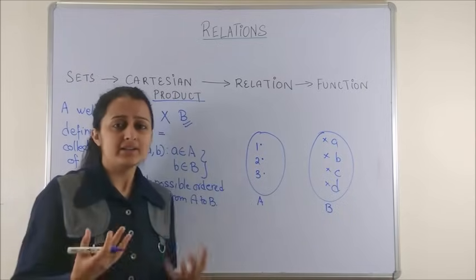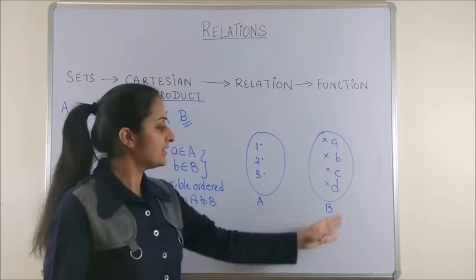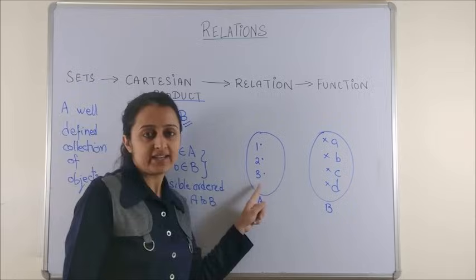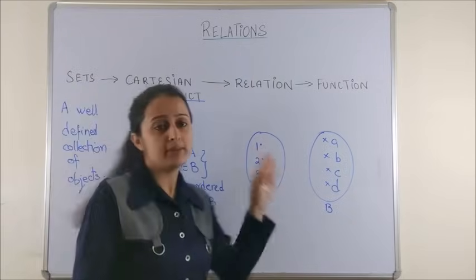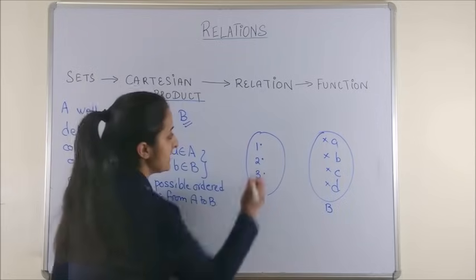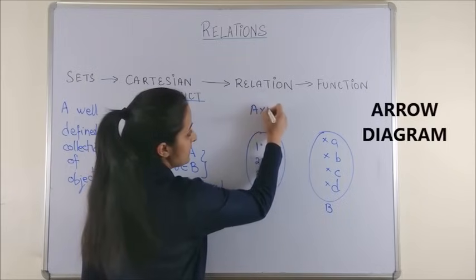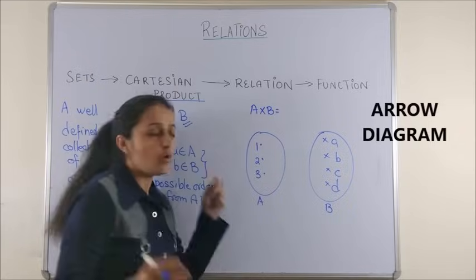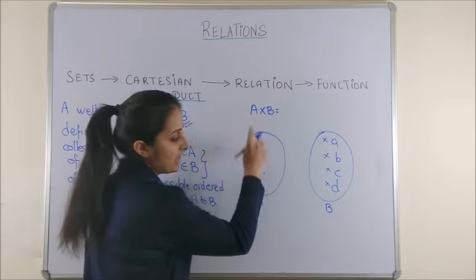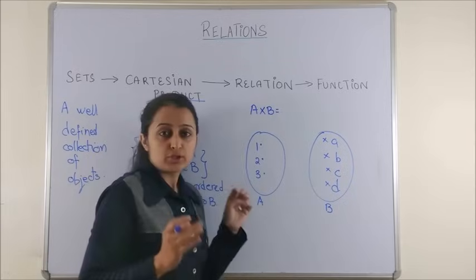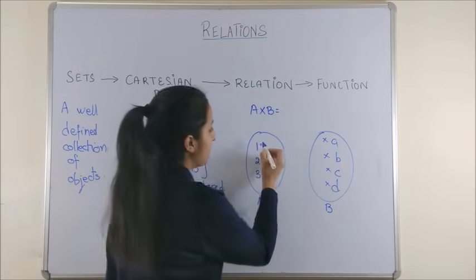Now to understand this better, I take a random example. Let's say my first set A has the elements 1, 2 and 3 and my set B have the elements A, B, C, D. If we are saying it is A cross B, this means all possible pairs that you can get beginning from A and ending in B. So showing them with an arrow diagram.